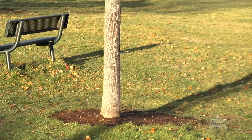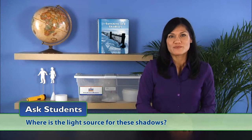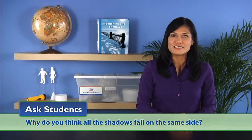Draw students' attention to which way the shadows are falling. Ask students, where is the light source for these shadows? The students should point to the sun. Remind them not to look directly at the sun. Then ask, why do you think all the shadows fall on the same side? Accept all answers at this time.